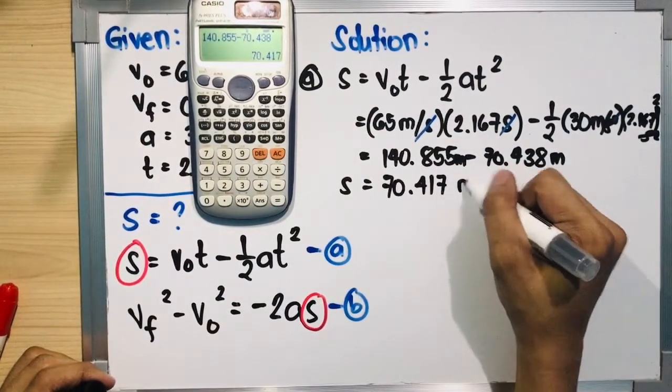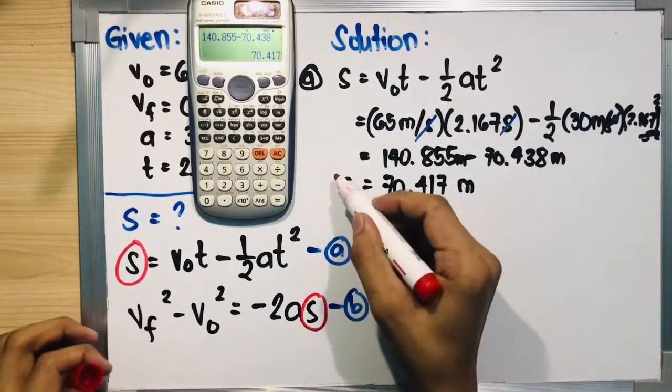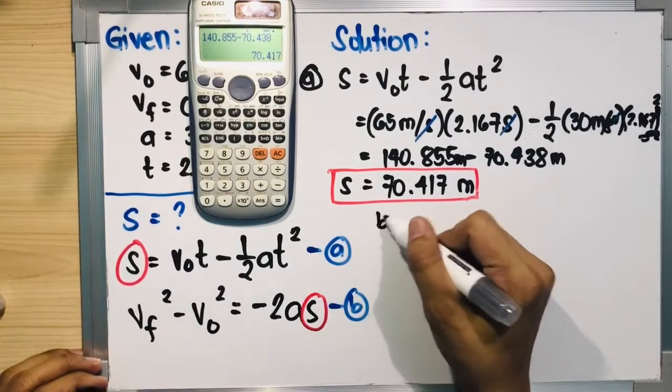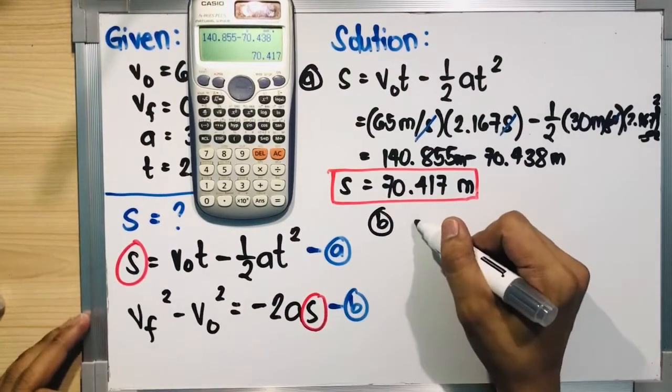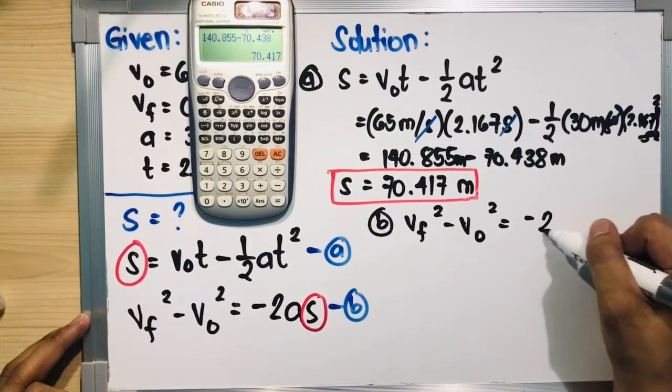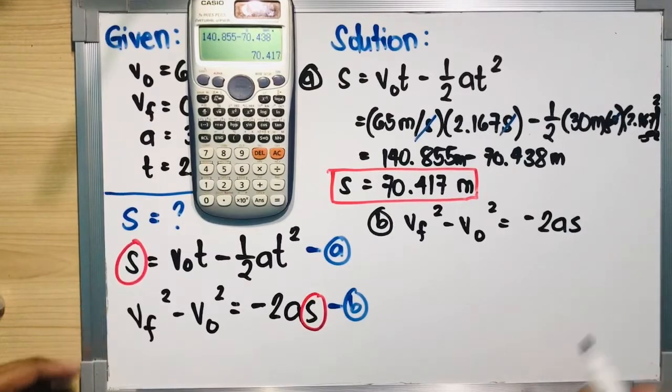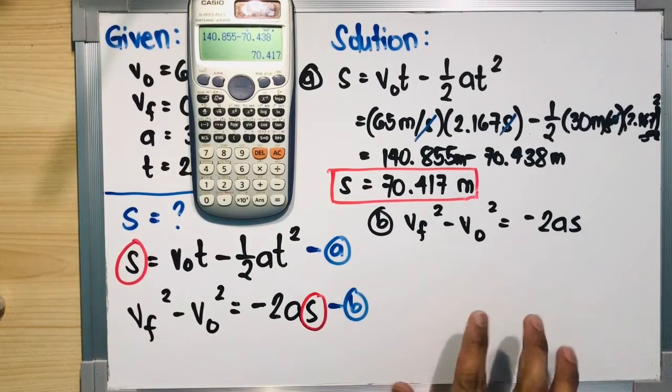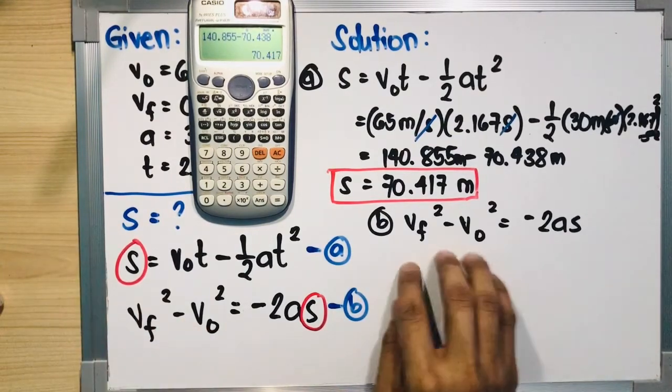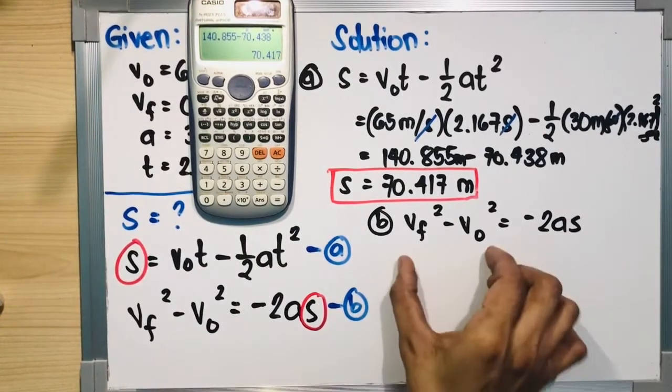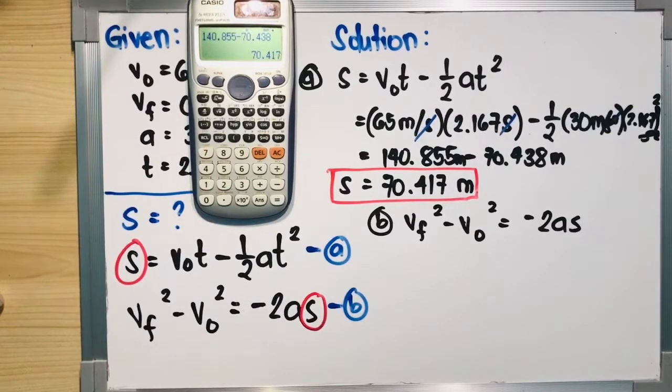Your distance is equal to 140.855 minus 70.438, and the answer is 70.417 meters. Let's do it again so that we can compare. If we use the third equation, will the output be the same? Let's solve the same problem using the second equation or the third equation: vf squared minus v₀ squared is equal to negative 2as.